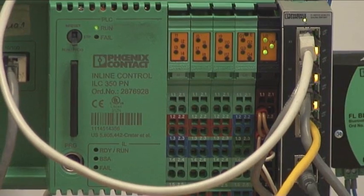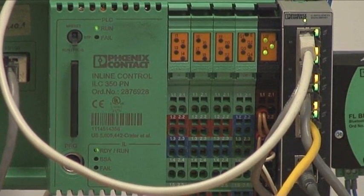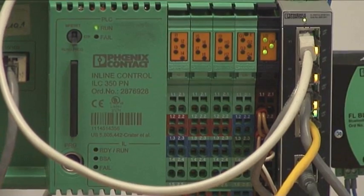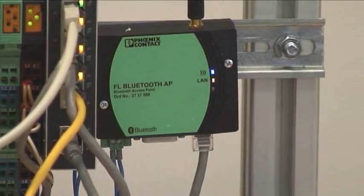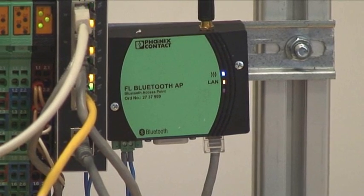The main controller, IRC 350, manages all other PLCs. It's the heart of the system. It communicates wirelessly via Bluetooth with controllers on trolleys.